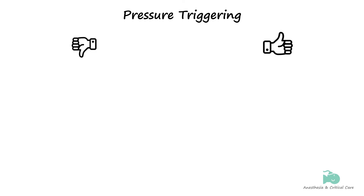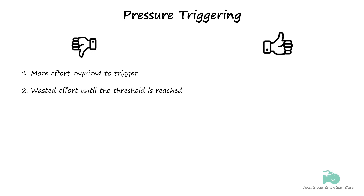Pressure triggering is an old-school method and is seldom used these days. It requires more effort to trigger the ventilator, as a change in pressure of even negative 1 cmH2O requires more patient effort than a change in flow. There is also wasted respiratory effort, as no inspiratory flow is generated while the patient is inhaling against a closed inspiratory valve — the breath is only generated when the pressure threshold is reached. This wasted effort may be counterproductive when the main objective of mechanical ventilation is to reduce the work of breathing.